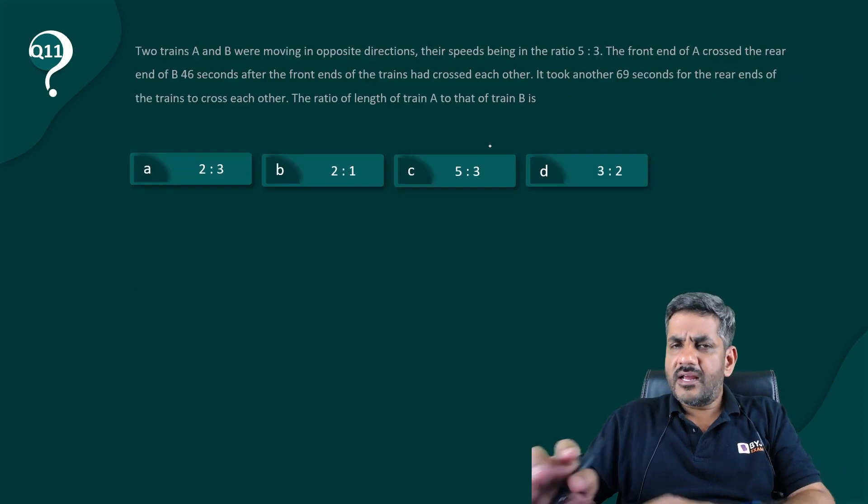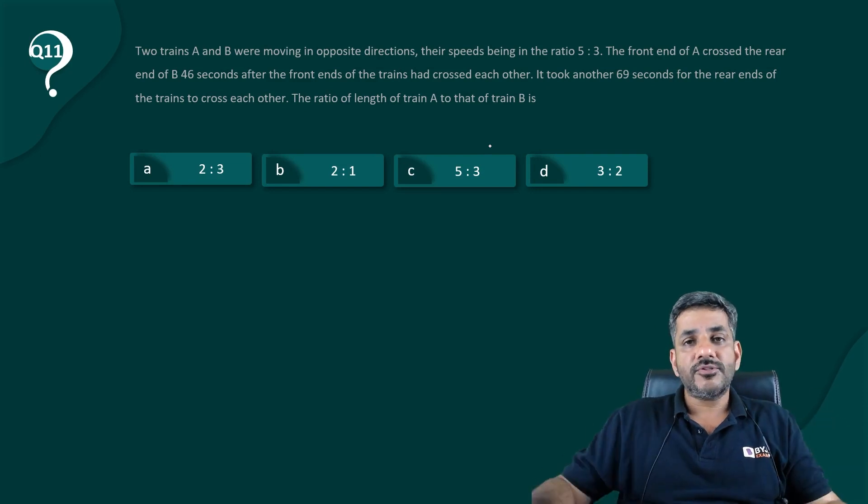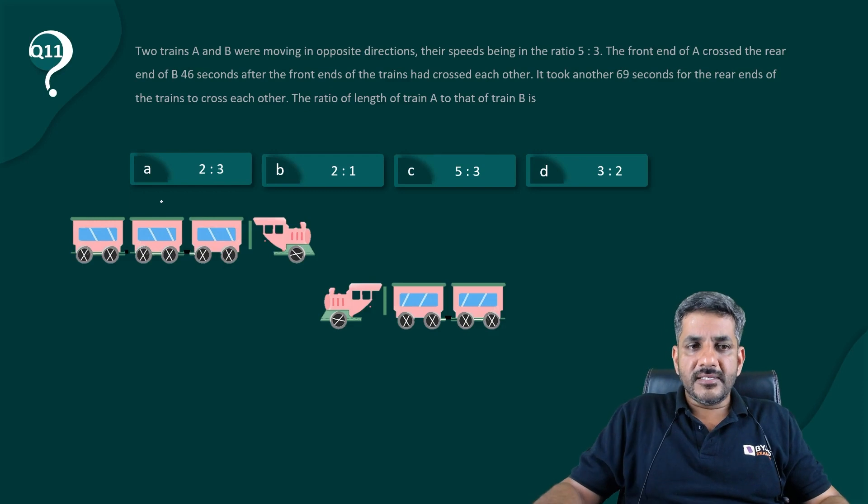So what I have done, I have tried to make you visualize the problem because that makes your job pretty easy. So just try to visualize it this way. These are the two trains. This is train A, this is train B.